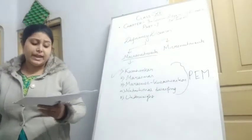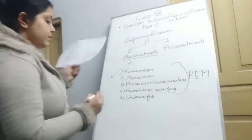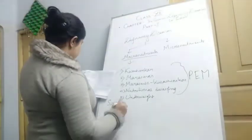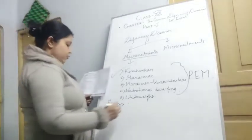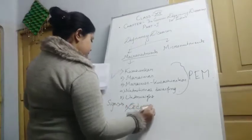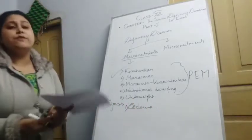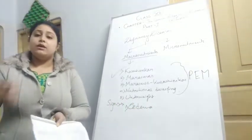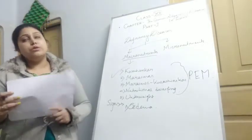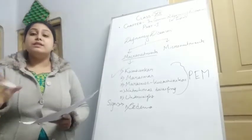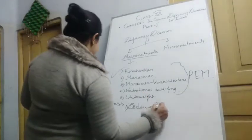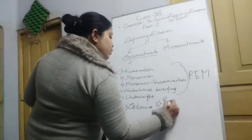The main signs and symptoms of Kwashiorkor: the first is edema. Edema is mainly the fluid retention in the whole body. It is mainly seen in the legs, hands, and also in the face area.